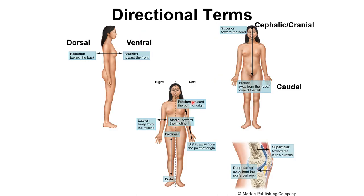Now we need to go over the directional terms. You have dorsal and ventral, but we're going to commonly use anterior and posterior. Anterior is toward the front; posterior is toward the back. Superior is towards the head; inferior is away from the head, toward the tail.